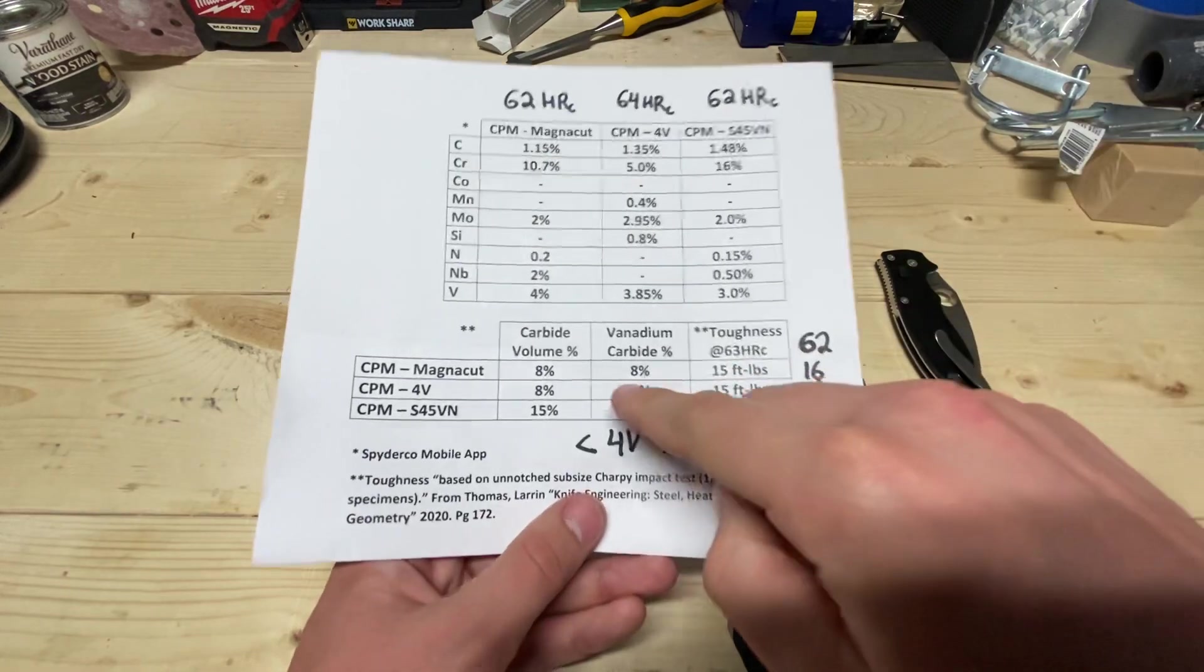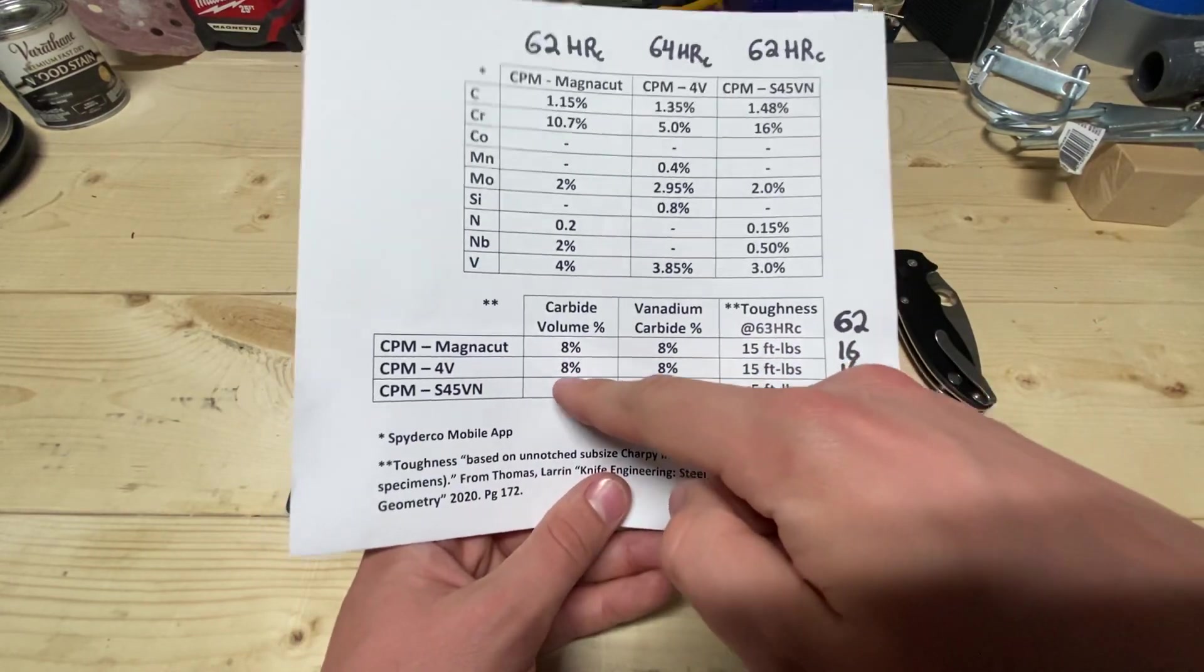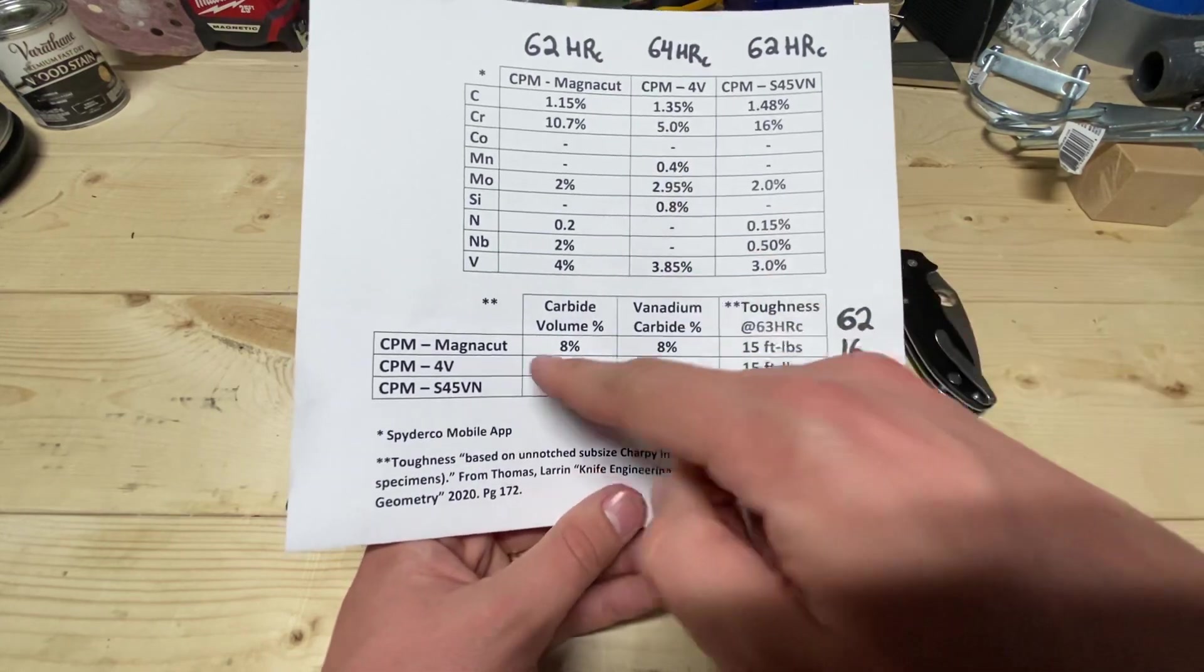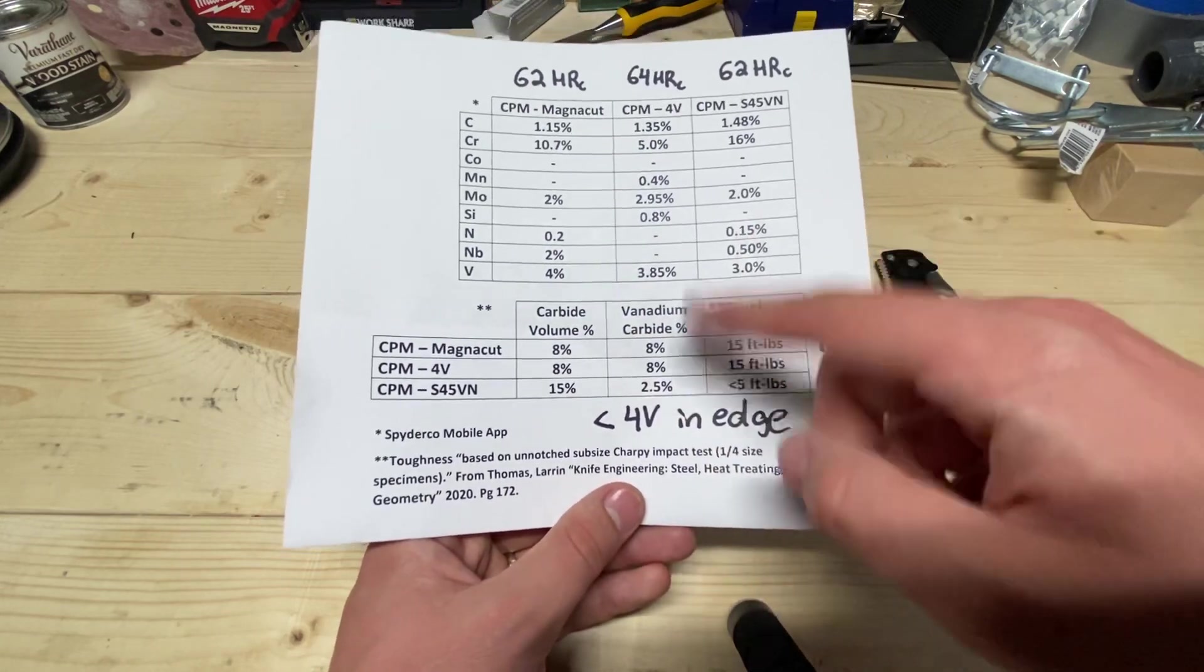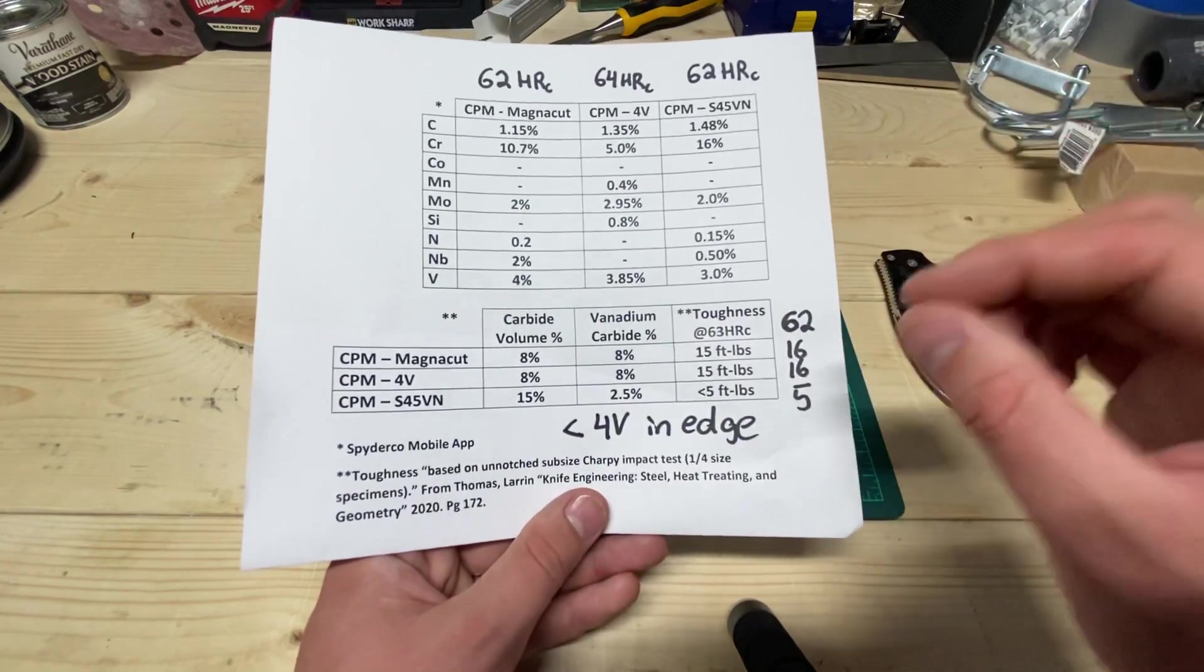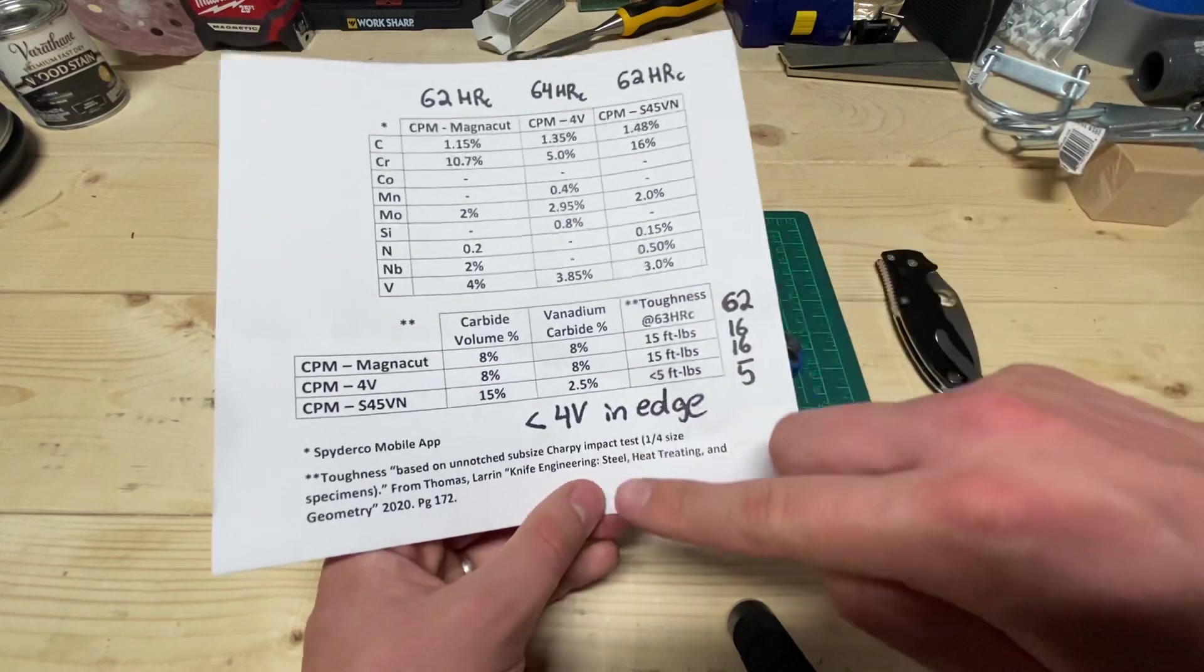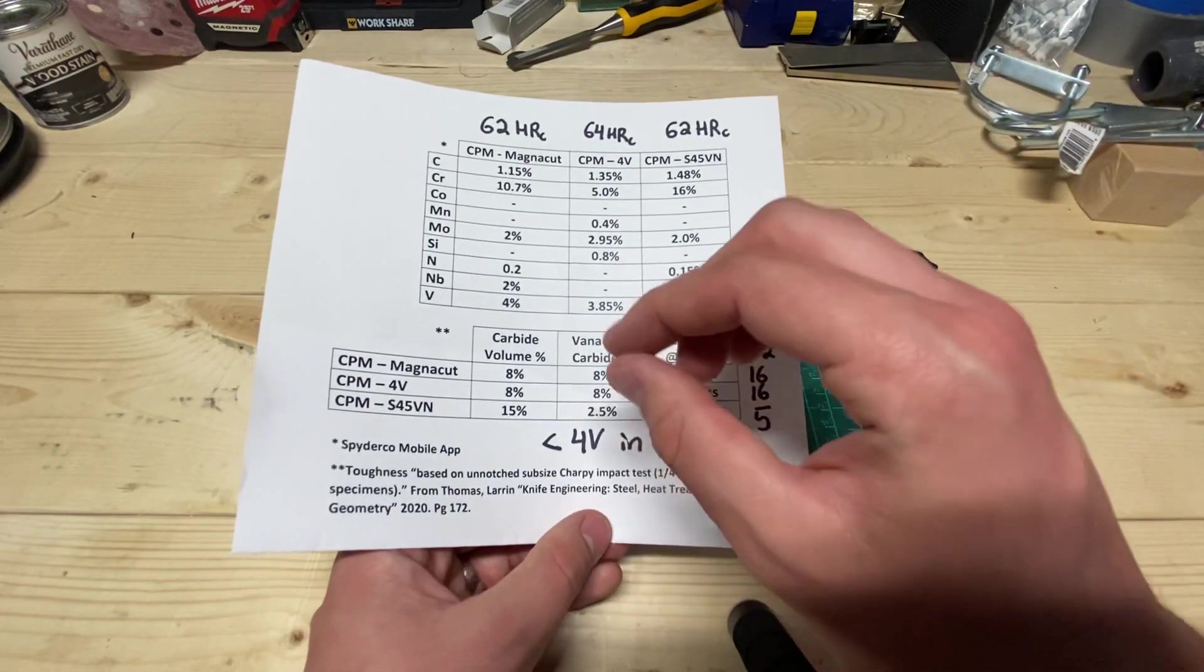Another thing to add is you see down here, CPM 4V, 100% of the carbides that are formed are vanadium carbides. And with MagnaCut, it's the same way. You know, there's niobium carbides and whatnot in there, but just keep it simple. It's making those very efficient vanadium carbides. And we like those because you get by far the most edge retention with the least amount of toughness reduction.